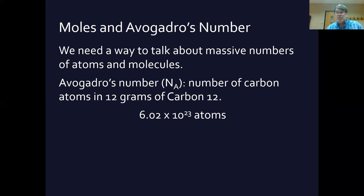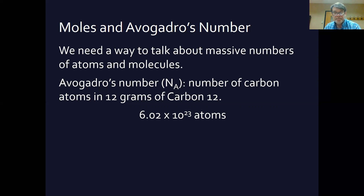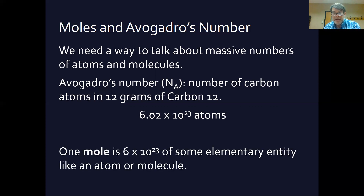There are other isotopes of carbon. Carbon-14 has 14 particles — still six protons, but eight neutrons — which makes it radioactive. Carbon-14 deteriorates over time because its extra neutrons make it unstable. Carbon-14 dating looks at how much it has deteriorated, using its half-life, to figure out how old a substance is. So basically, 12 grams of carbon-12 turns out to be 6 times 10 to the 23rd atoms. A mole of something — whether atoms, molecules, or even coffee cups — is 6 times 10 to the 23rd of that thing. This is Avogadro's number.